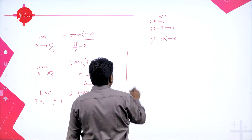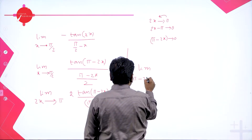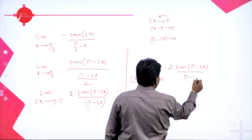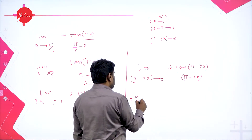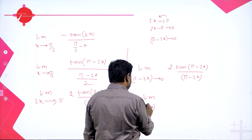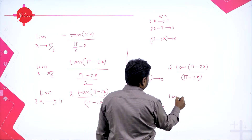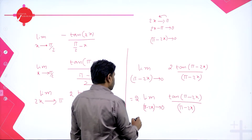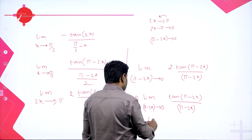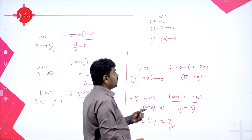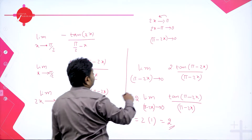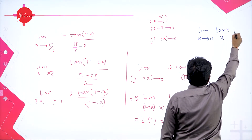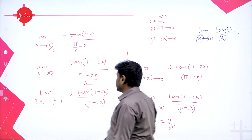We can now rewrite the limit as: limit of (π − 2x) → 0 of [2 · tan(π − 2x)] / (π − 2x). Taking out the constant 2, this becomes 2 times the limit of tan θ / θ as θ → 0. By the standard result, limit θ→0 of tan θ / θ = 1. So the answer is 2 × 1 = 2.